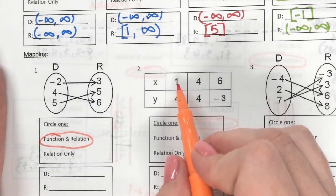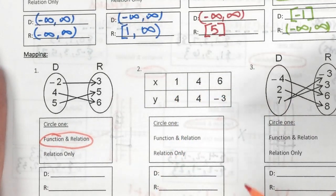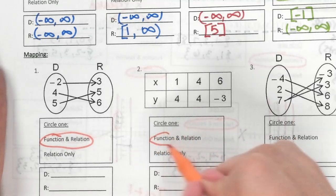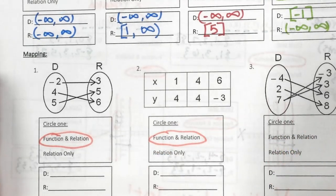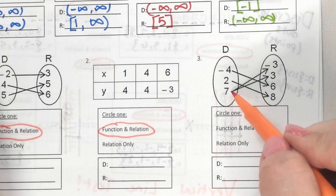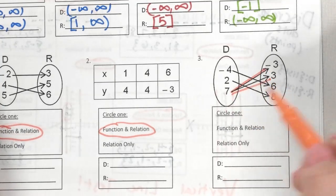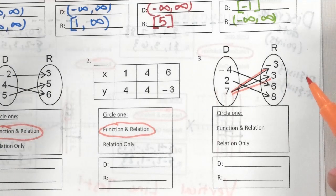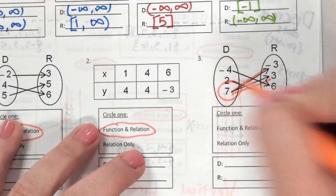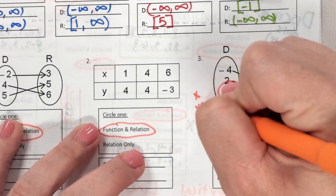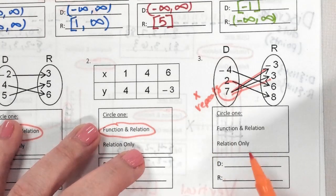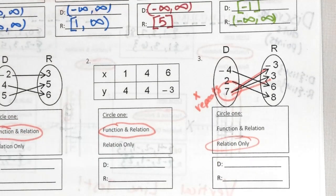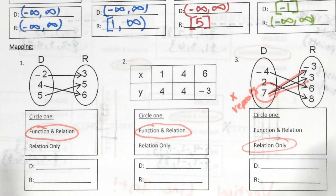Tables should be really easy: X values 1, 4, 6 — X never repeated, Y did but that doesn't bother us, so this is a function. The last one: notice 7 appears twice — so this is 7 negative 3 and 7 positive 3 — we said 7 twice. Therefore X repeated, and this is a relation only. You would still find your domain and range, but we've already done many examples of that.